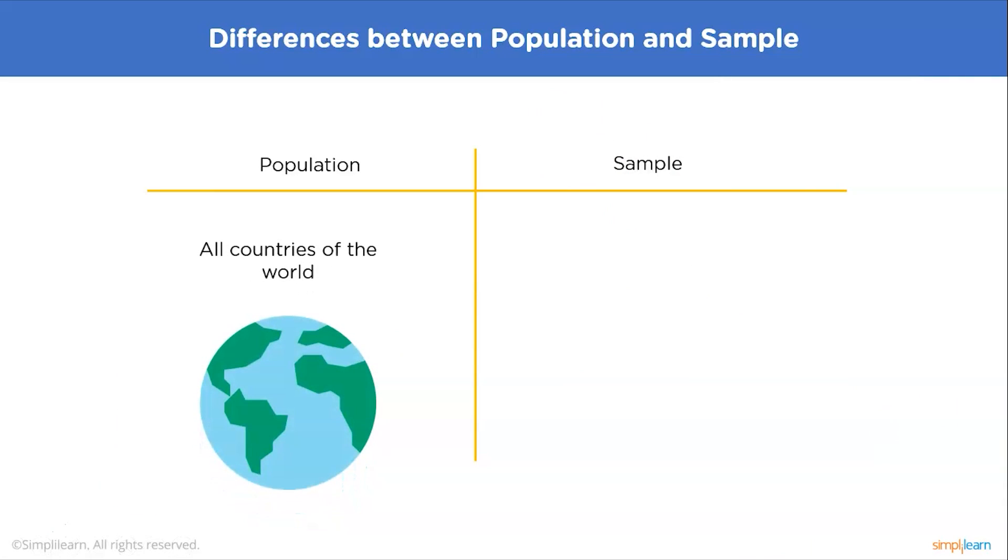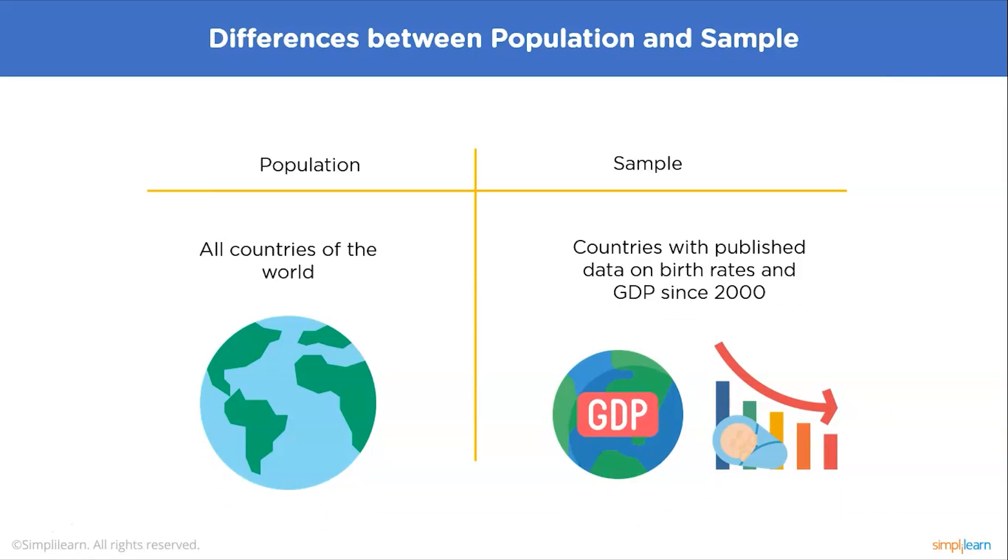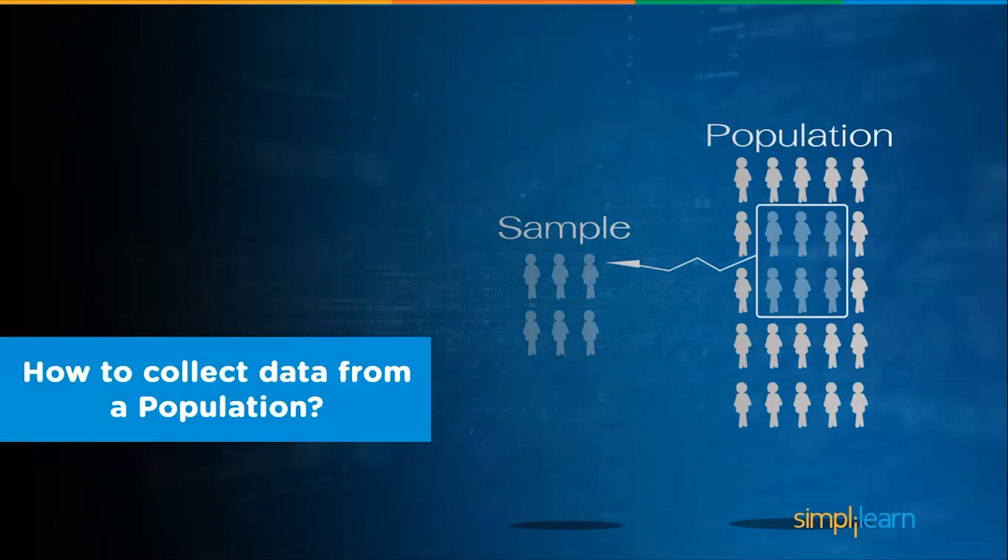Another example is all countries of the world. This represents a population of all the countries. A sample would be countries with published data on birth rates and GDP since 2000.